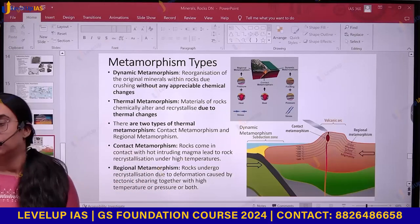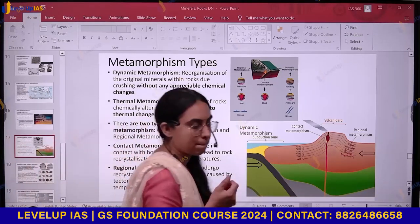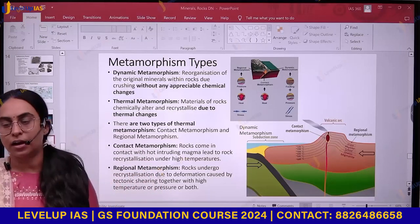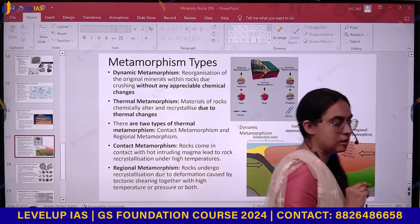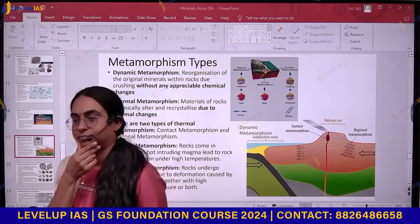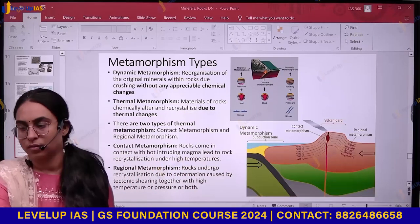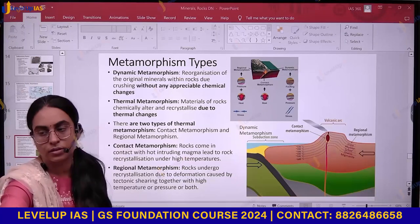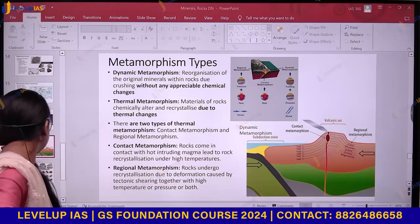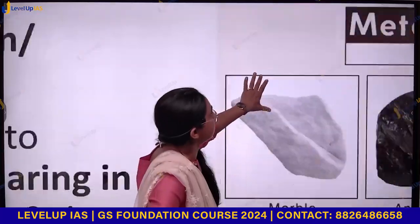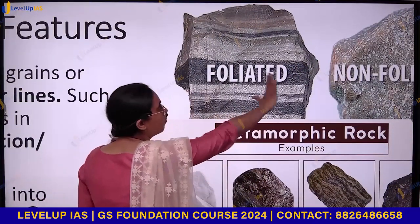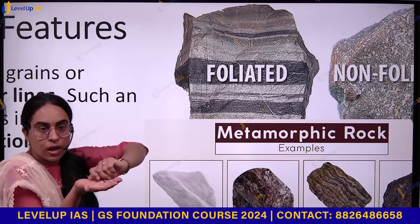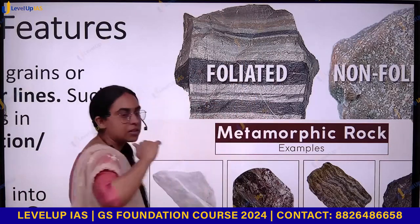The characteristics of metamorphic rocks: first, they can be arranged in layers called foliation — F-O-L-I-A-T-I-O-N. You can see the layers but you cannot separate them. This is different from sedimentary rock layers, which you can separate. Metamorphic rocks are foliated or banded, not layered.